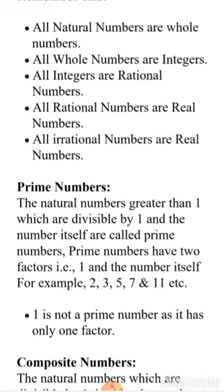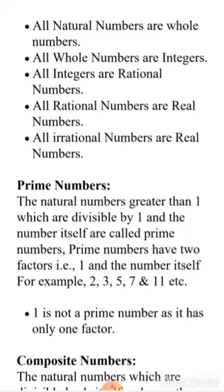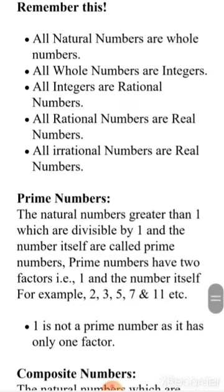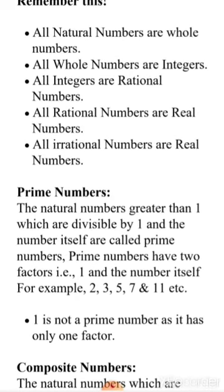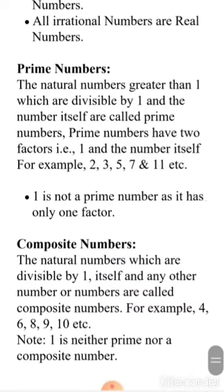All natural numbers are whole numbers — definitely true, because whole numbers start from 0 and natural numbers start from 1. All whole numbers are integers, because the definition of integers says it is a collection of whole numbers with their negatives. All integers are rational numbers — for example, minus 5 can be written as minus 5 upon 1, which is a rational number. All rational numbers are real numbers, and all irrational numbers are real numbers — definitely true, because a real number is a combination of rational and irrational.